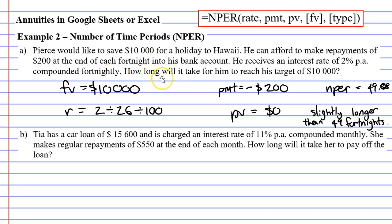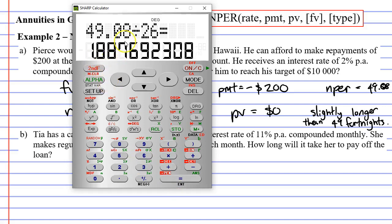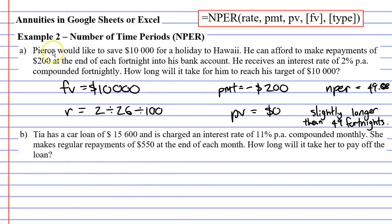When it asks how long it will take him to reach his target of $10,000, we can say slightly longer than 49 fortnights. Or we could go an extra step and convert this to years. We do this by taking 49.08 and dividing it by the number of fortnights in a year, or 26. This comes to roughly 1.9 years, so almost two years for Pierce to raise this $10,000.